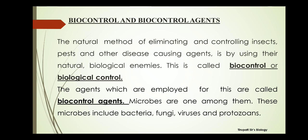By using natural biological methods against disease-causing agents and pests, we use bio-organisms to kill them. The organisms that control these disease-causing agents and pests are called biocontrol agents. The microbes that serve as biocontrol agents include bacteria, fungi, virus, and protozoa.